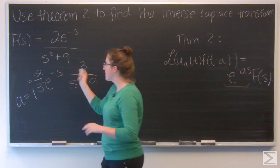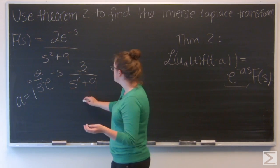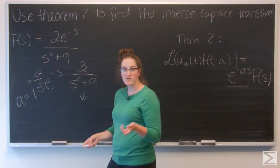So, the 3s cancel out, and I really still have 2. I haven't changed anything. So, this becomes sine of 3t.